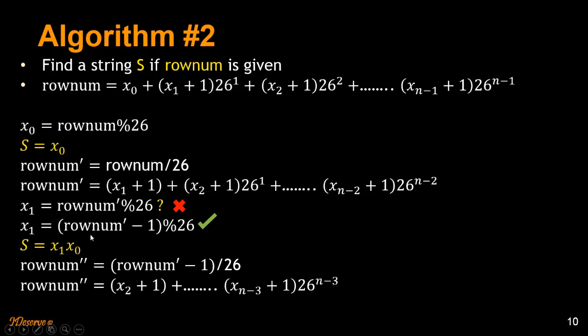So then we get x2 plus 1 plus dot dot dot xn minus 3 and so on. And we can extract x2 similarly. So that's the procedure to do it. Now let's look at an example to understand this process.